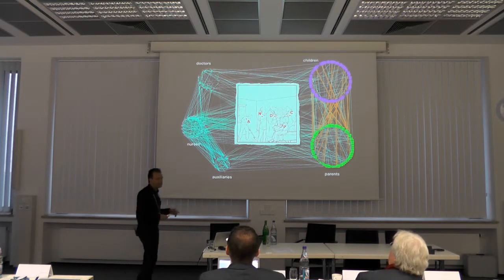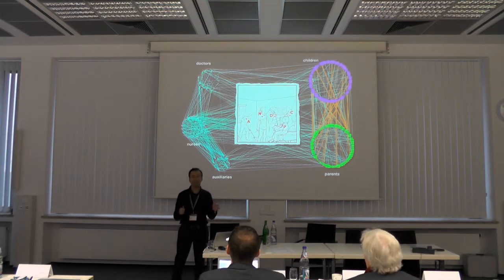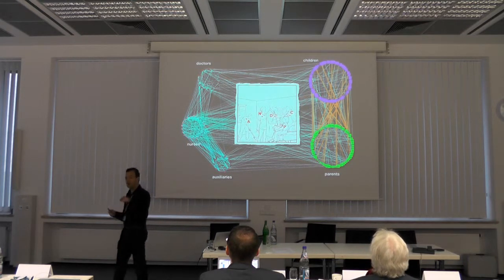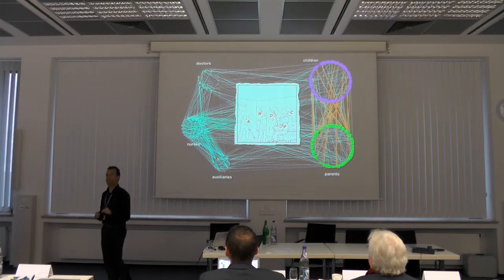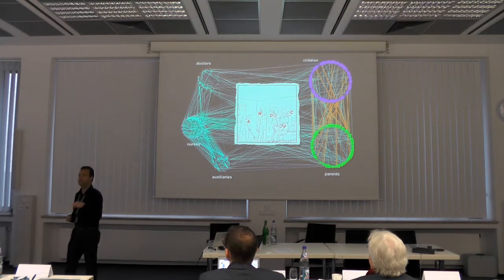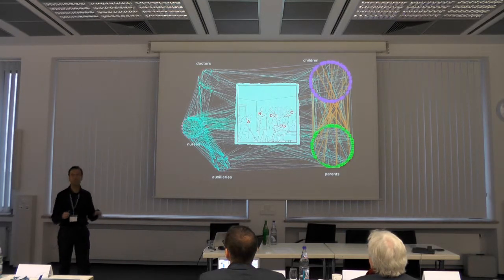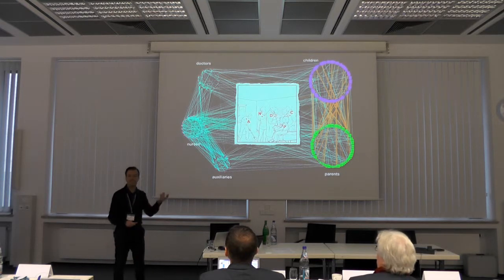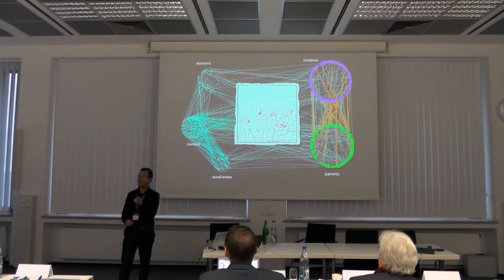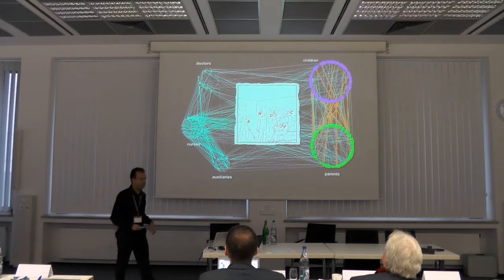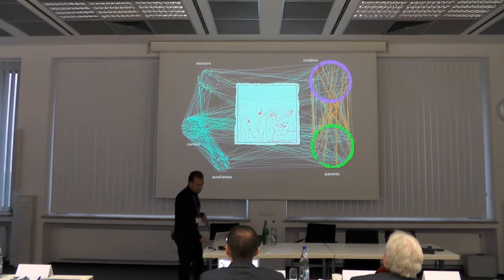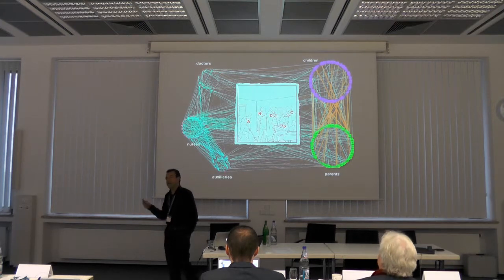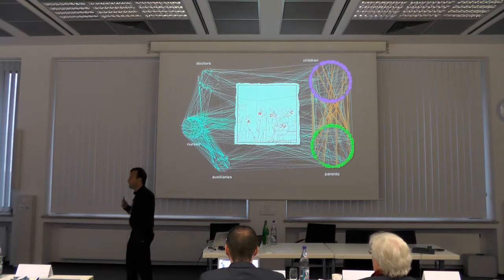What happens when you show this data to a hospital manager is that somebody says 'wow, this shouldn't happen.' And you can actually dig into the data and see that maybe there is a smoking break you didn't know about, involving doctors, nurses, and auxiliaries, responsible for a specific clique and contact pattern in the structure. Once you have this data, you can do all sorts of network science-inspired, modeling-inspired studies.